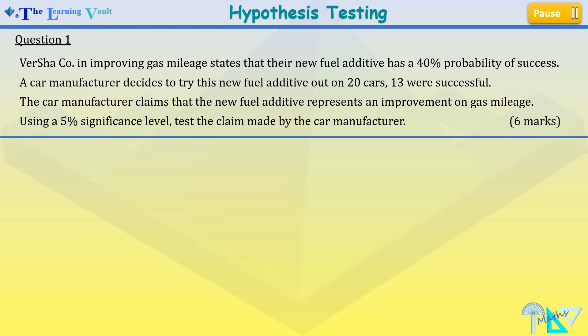First we write our test statistics. X is the number of cars successful from using the new fuel additive, and p is the probability of success for each car.